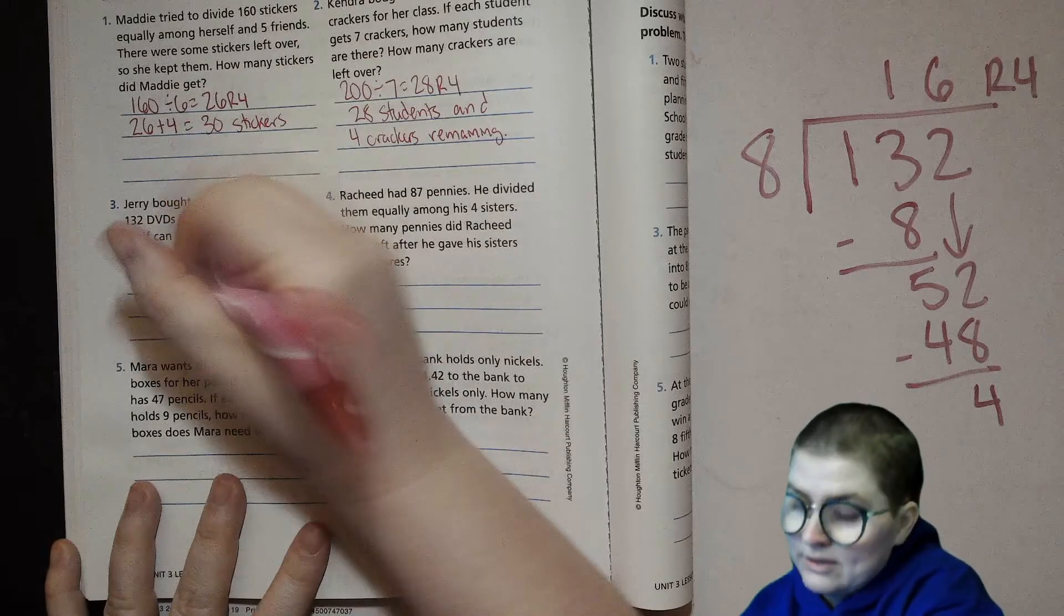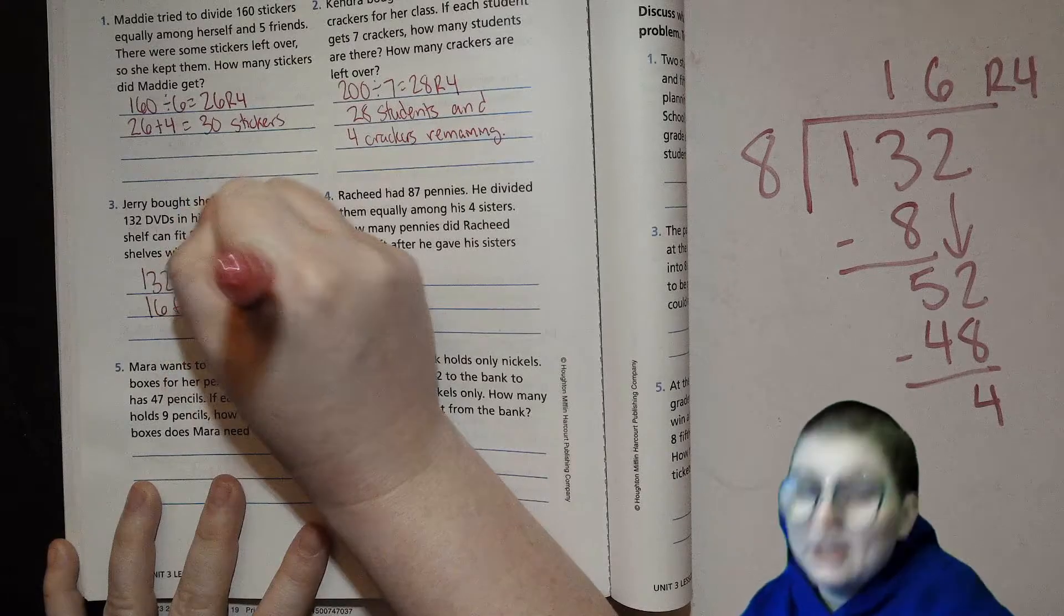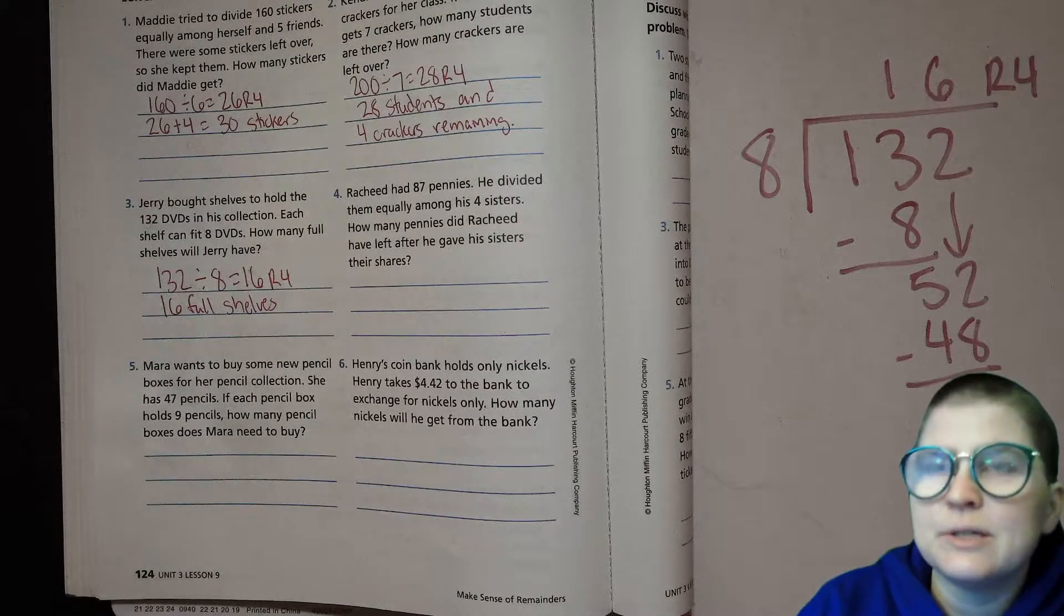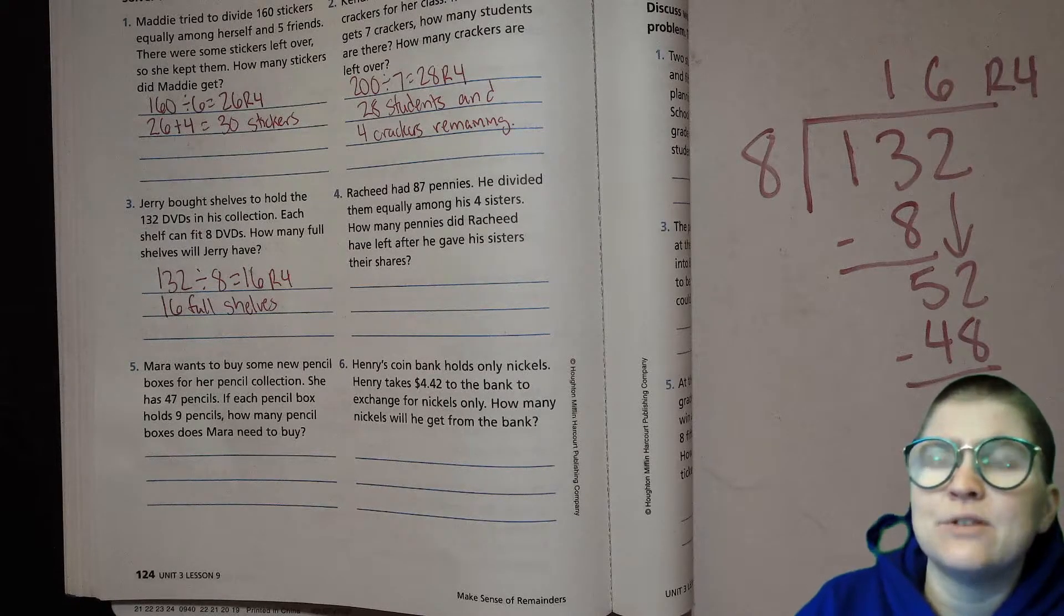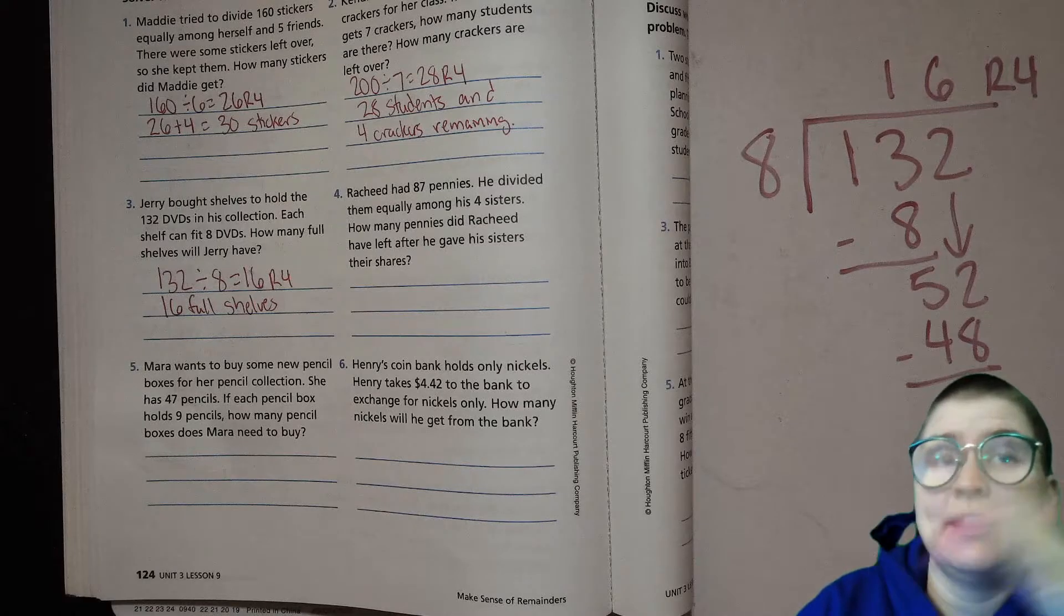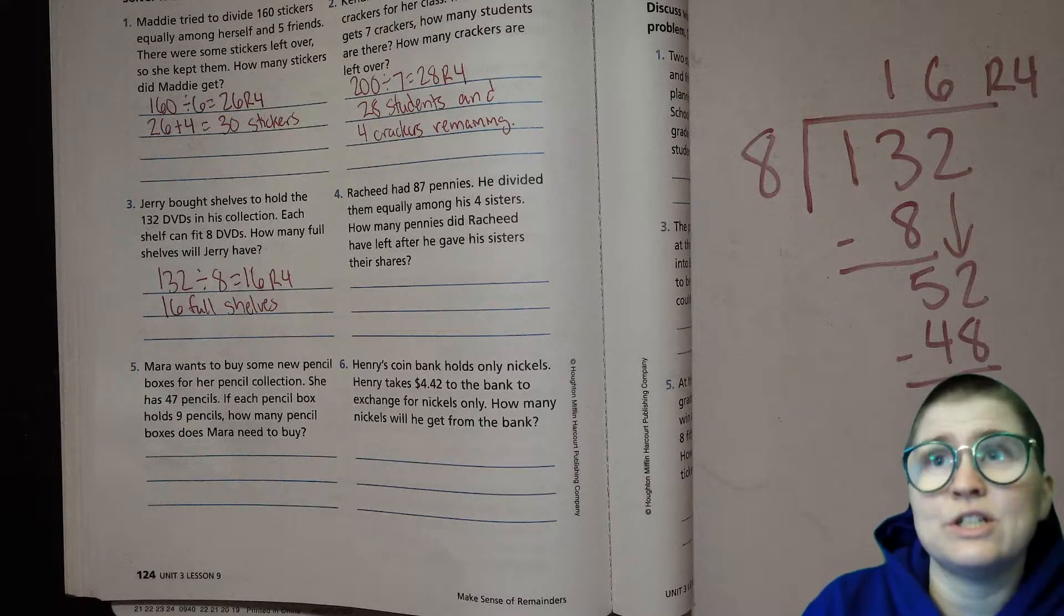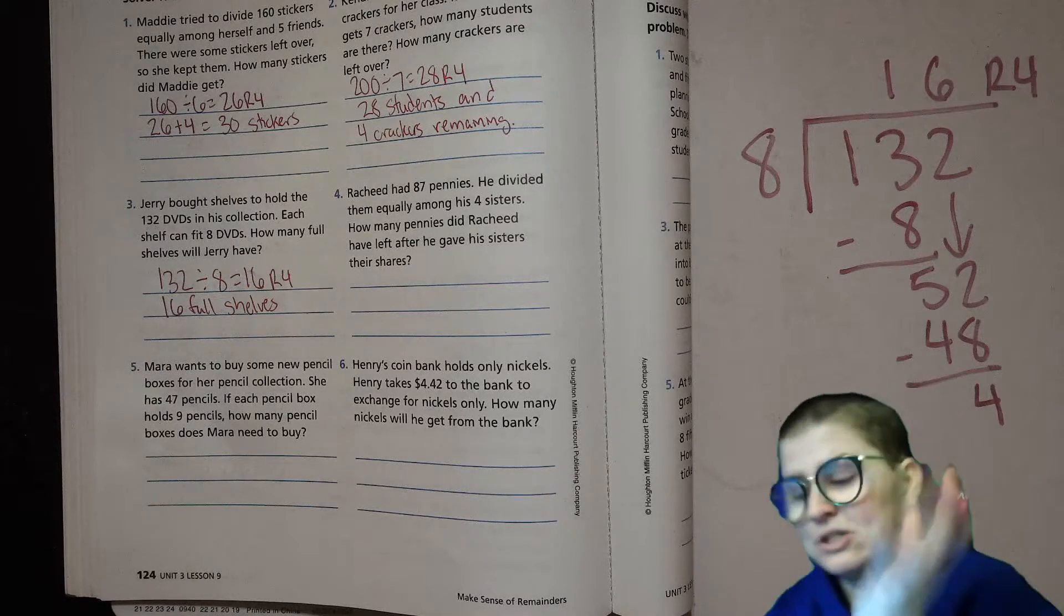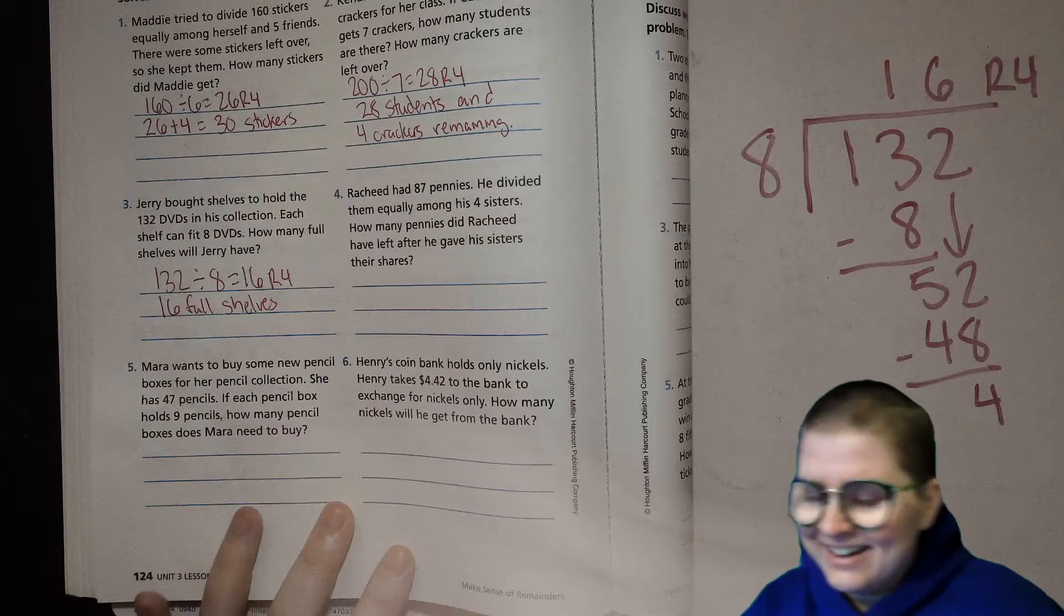The remainder doesn't matter. That was 132 divided by 8 equals 16 remainder 4, so 16 full shelves. If the question were asking like, does he need another shelf or something, or how many shelves does he need to fill them at any level of capacity, then we could say 17 because there's one shelf that's like half full. But we apparently don't care, so we're just gonna say throw those DVDs away.